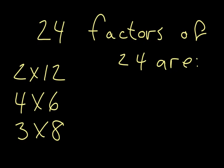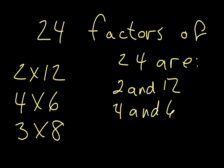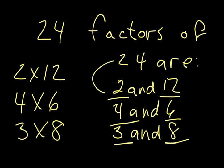So that means that the factors of 24 are 2 and 12, 4 and 6, 3 and 8. That's really all factors are—they are just the numbers that go evenly into 24 or whatever number you're looking for without any remainders.